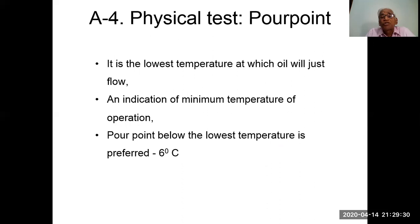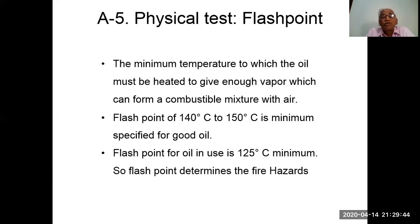Pour point is the lowest temperature at which the oil will just flow, giving an indication of the minimum temperature of operation. A pour point below minus 6°C is preferred as the minimum temperature. Flash point is the minimum temperature to which oil must be heated to give enough vapor to form a combustible mixture. Flash point is 140°C to 150°C for new good oil, and minimum 125°C for oil in use. Flash point determines the fire hazard.